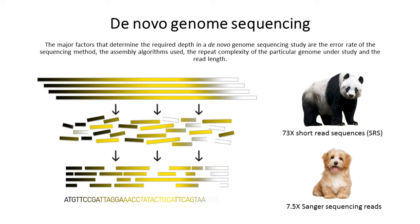A similarly low coverage, approximately 7.5-fold dog genome, which is similar in size to that of the giant panda and was assembled using Sanger sequencing reads, is more complete and more contiguous than the giant panda genome.